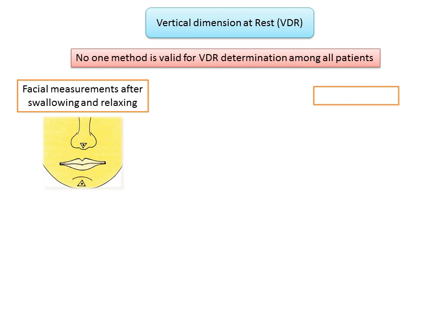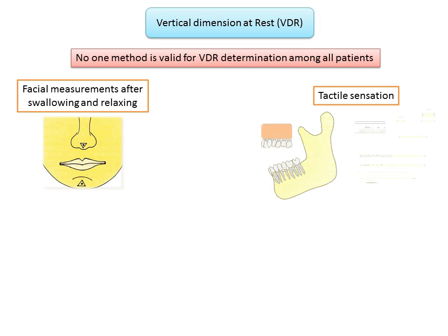Another method is tactile sensation. The patient is asked to stand erect and open the mouth wide until discomfort is felt in the masticatory muscles. The patient then closes slowly and is instructed to stop when the muscles feel totally relaxed and comfortable. The distance between the two reference points is then measured.